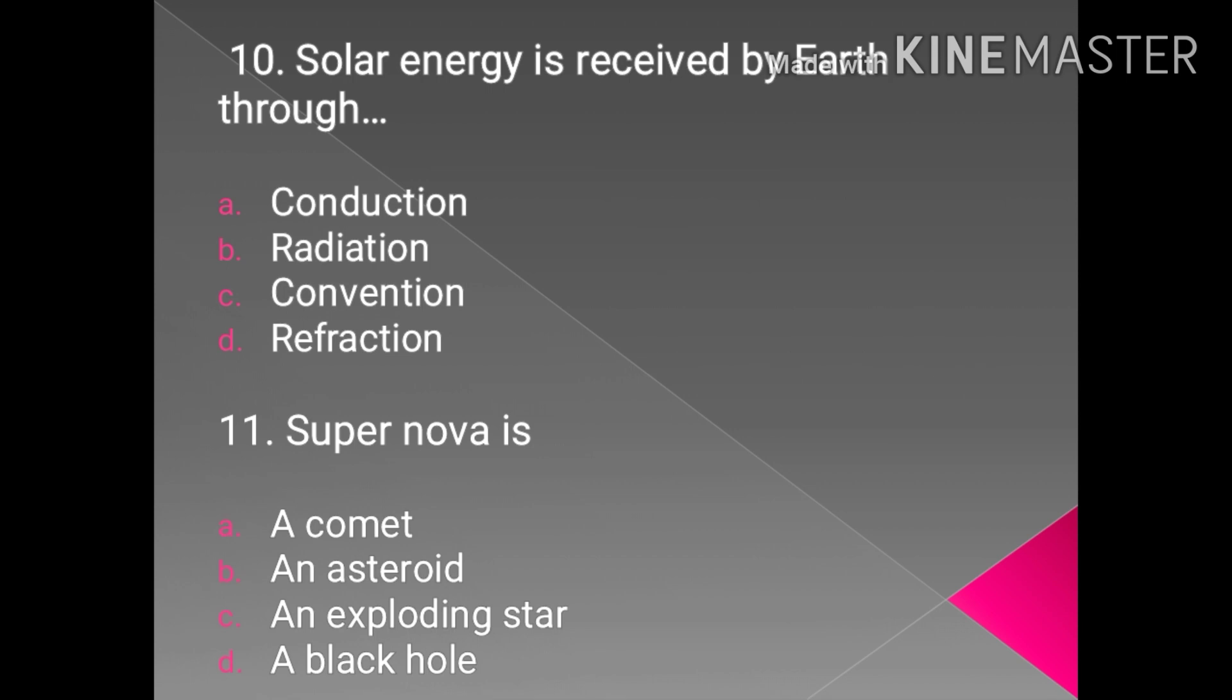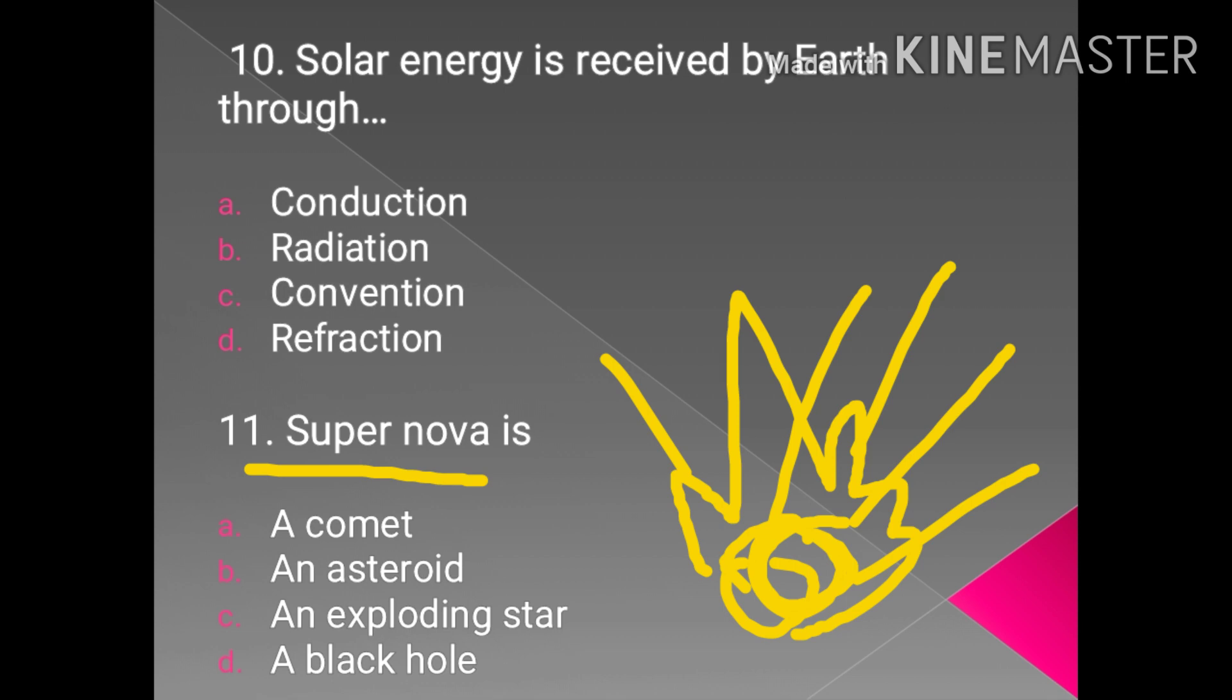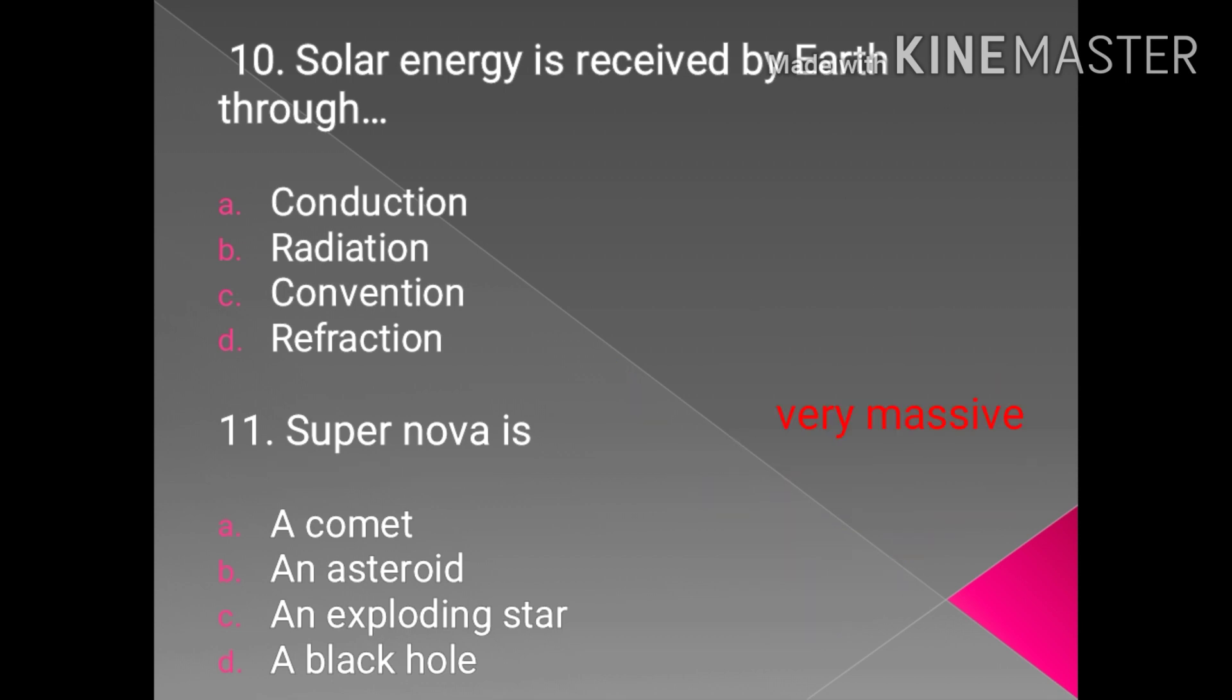Question number 11 is: what is supernova? When a massive star with very high density collapses and exhausts its supply of fuel, it blasts out in a giant explosion known as supernova. This means when the star is very much massive but the volume is less and the density is very much high, then the star itself collapses.